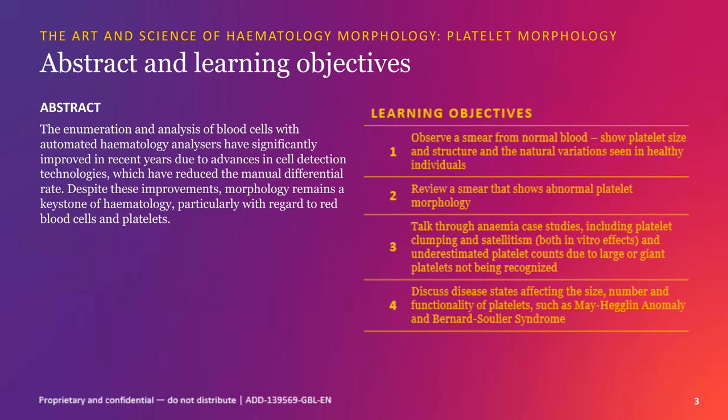Today's learning objectives are: observe a smear from normal blood showing platelet size, structure, and natural variations seen in healthy individuals; review smears showing abnormal platelet morphology; and talk through platelet case studies including platelet clumping and satellitism — both in vitro effects — and underestimated platelet counts due to large or giant platelets not being recognized.